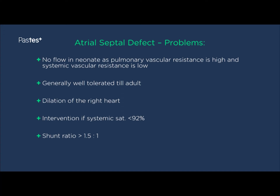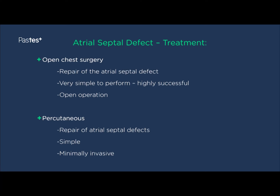Atrial septal defects should be closed if the systemic saturations fall less than 92%, or the shunt ratio exceeds 1.5 to 1. There are two broad techniques for closing these defects. Open chest surgery involves opening the chest and putting a patch over the defect — a simple procedure for a cardiothoracic surgeon, very successful, but with an extended recovery period. More recently, it's possible to perform percutaneous ASD repairs using a closure device pushed up from the right femoral vein. The advantage is that it's simple, minimally invasive, often only requiring a day admission or a single night stay. The difficulty is that it's very hard to treat fenestrated atria where there is more than one hole.